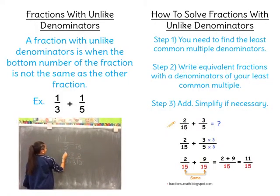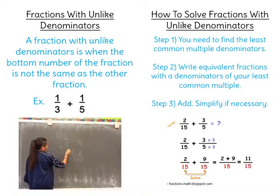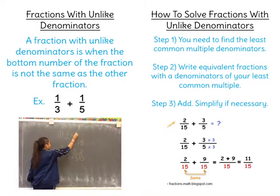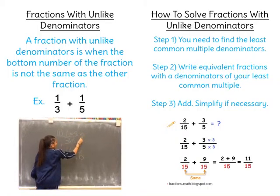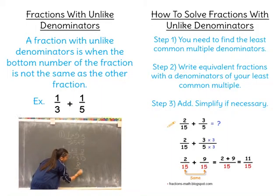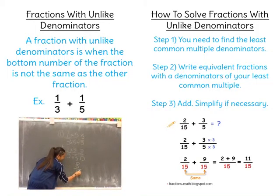And then you ask yourself what is three times what equals fifteen, and that's five. And then you multiply five times one, and it equals five. And then you add straight down eight over fifteen, and then you reduce if necessary.